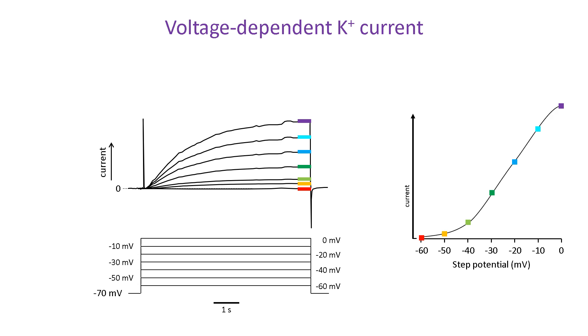Note that at the onset of the voltage step, there is often a large, rapid and transient event in current records. That is due to charging of the cell membrane and does not relate to ion channel activity. So, if you see this in figures when you're reading papers, you can mostly ignore it.